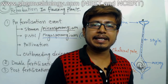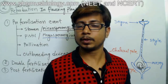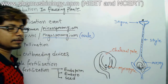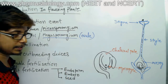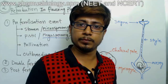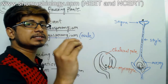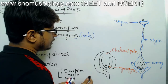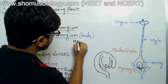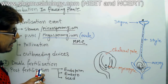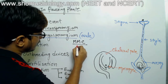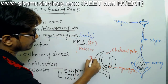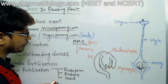Once the ovule or megasporangium is in place, the megasporangium contains megasporangium mother cells. Just like in the development of the male part — where microsporangium has progenitor mother cells that give rise to microspores — similarly the megasporangium mother cells, also known as MMC, are also present in this tissue. Meiosis of the MMC, which has 2n chromosomes, will produce n-chromosome-containing gametes known as megaspores.